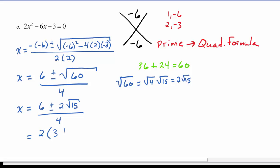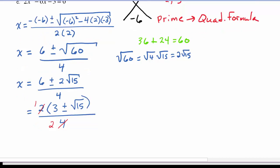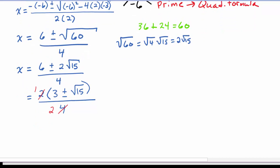We would have 3 plus or minus radical 15, divided by 4, and now we can cancel. We have 2 goes into 2 once, 2 goes into 4 twice, and finally we have that x is equal to 3 plus or minus radical 15, divided by 2.